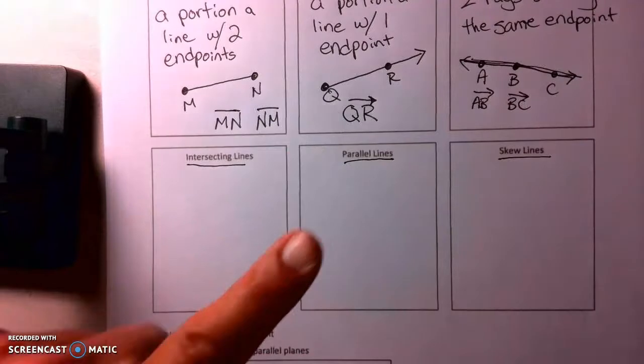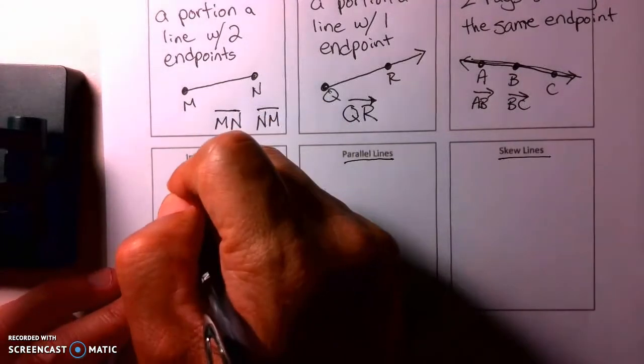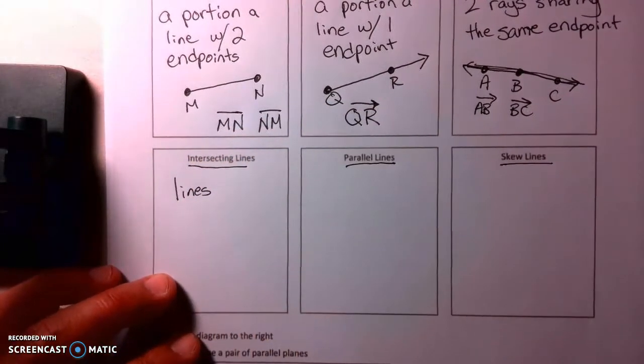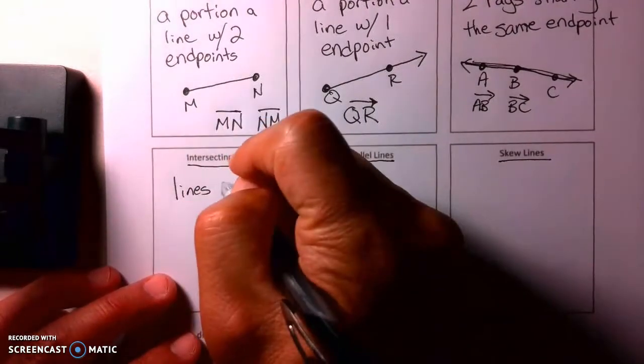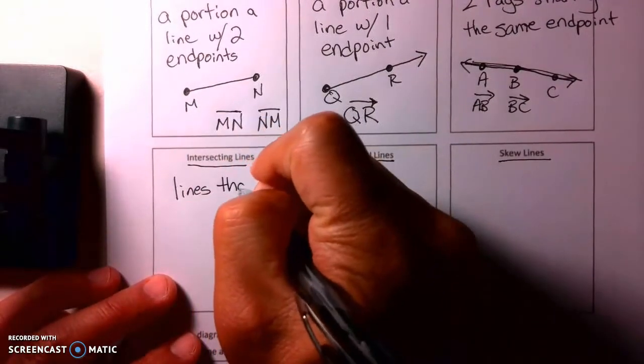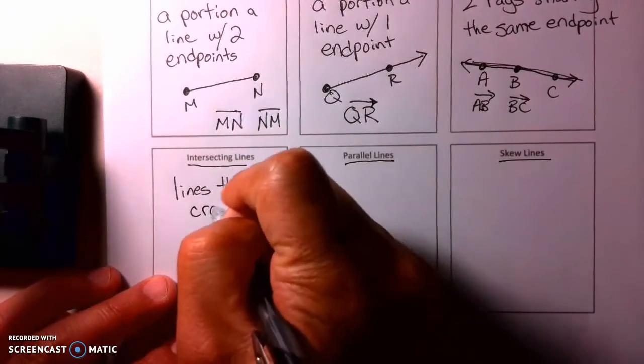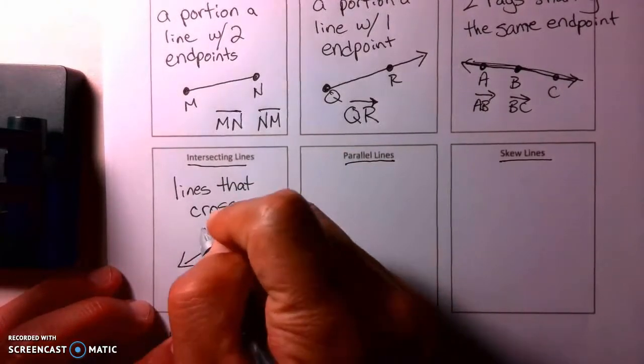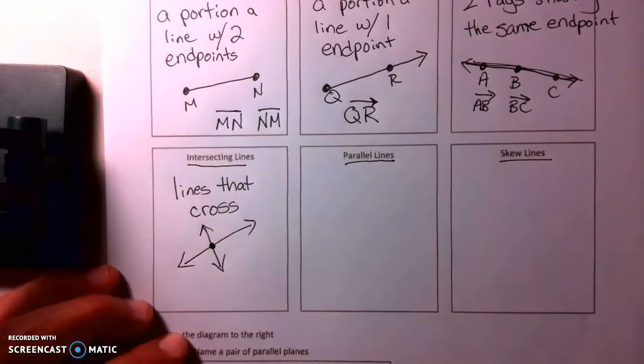Intersecting lines - intersecting means they crisscross. Lines that cross, and simply they just hit each other. And they will intersect at one point here.